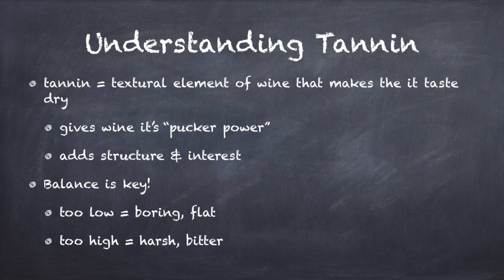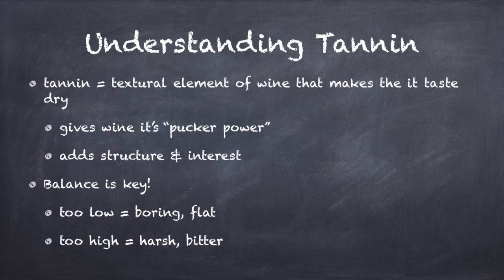So, what exactly are tannins anyway? You've probably heard the term, but most people have a pretty hard time describing what tannins actually are. From a technical standpoint, tannins are naturally occurring molecules that are found in plant leaves, seeds, stems, and fruit skins. In the context of wine, tannin is a structural element that makes the wine taste dry and astringent. It's sometimes described as the pucker power of the wine, since a very tannic wine can make your lips pucker.